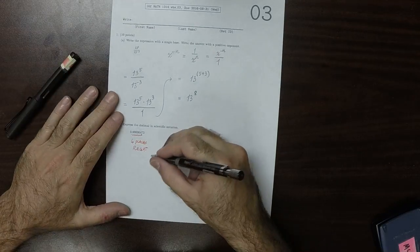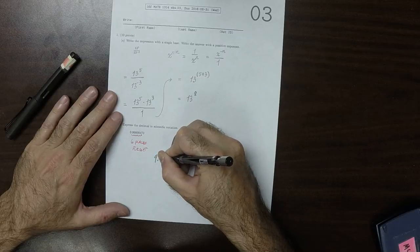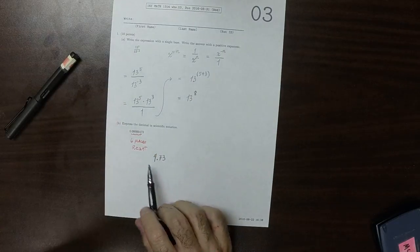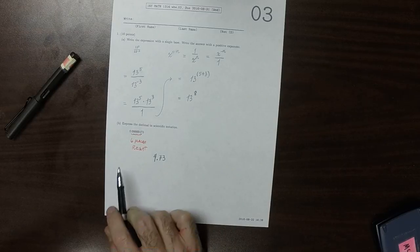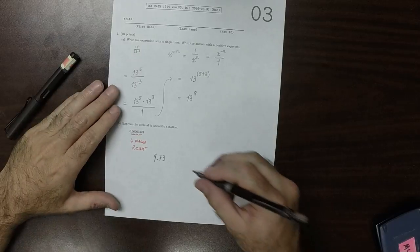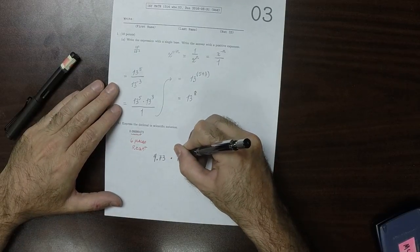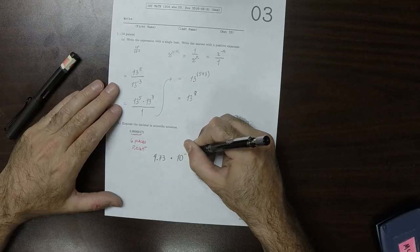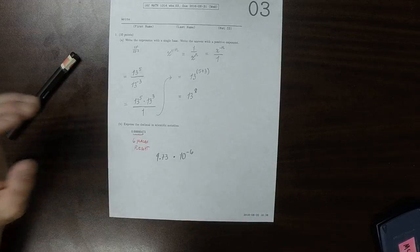Which means that the answer will be 4.73 because that's the number that we get when we move the decimal place 6 places. And to encode the fact that we moved the decimal 6 places to the right, this will be multiplied by 10 to negative 6. And that's the answer to the question.